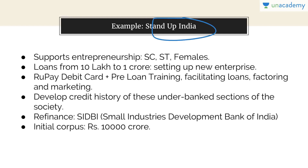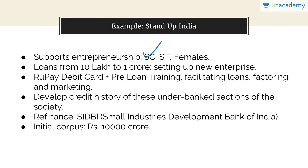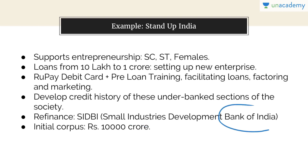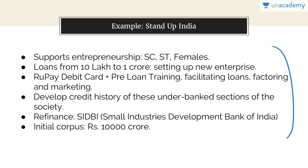Let's see how your notes should look — take Stand-Up India as an example. Stand-Up India supports entrepreneurship for Scheduled Castes, Scheduled Tribes, and females. For setting up new enterprises, a loan from rupees 10 lakh to 1 crore is given, along with a RuPay debit card, pre-loan training, facilitated loans, and factoring and marketing support. Credit history of underbanked sections is developed, with refinance through SIDBI and an initial corpus of rupees 10,000 crores. You can revise these notes in five seconds before an exam.